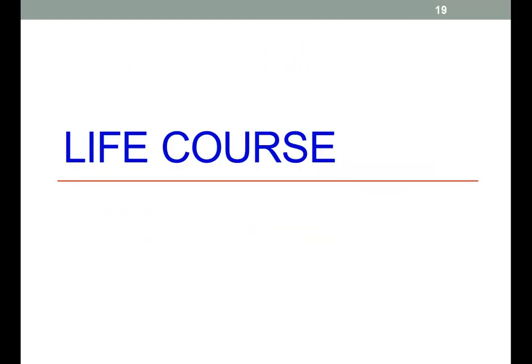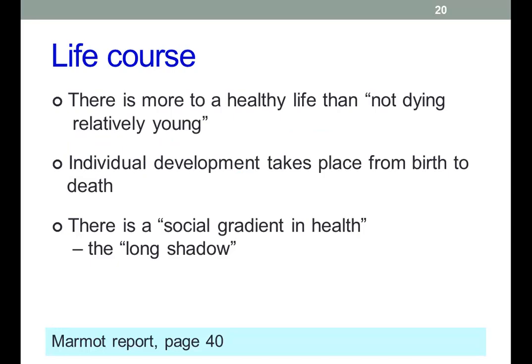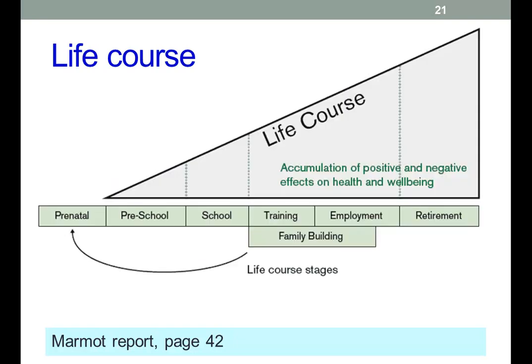The idea of life course is key to Marmot, not least because of the evidence that inequalities do accumulate through life. We start off being disadvantaged and these disadvantages accumulate as we get older. Individual development takes place from birth to death, and epigenetics suggests this is also true of pregnancy and probably preconception as well. These are the life course stages identified by Marmot — disadvantage starts before birth and accumulates throughout life.